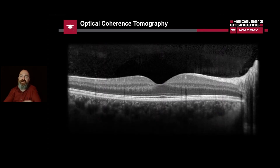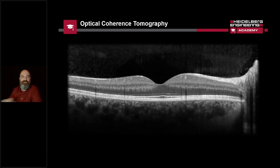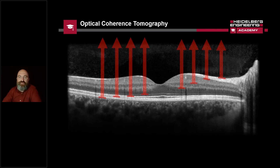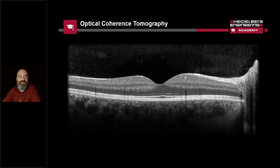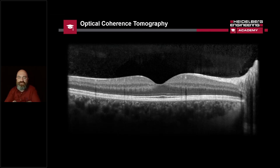OCT — optical coherence tomography — is a superluminescent diode of light that beams into the eye and reflects back from all different layers of the retina, and sometimes from pathology as well. That's how we get this wonderful in vivo cross section of the retina when we use this technology. OCT has completely revolutionized ophthalmology and now optometry over the past 20 years.